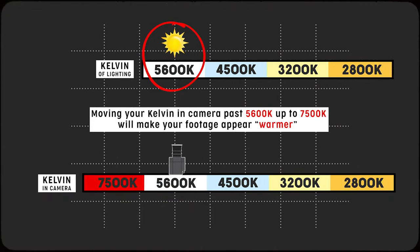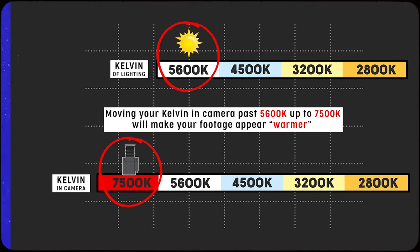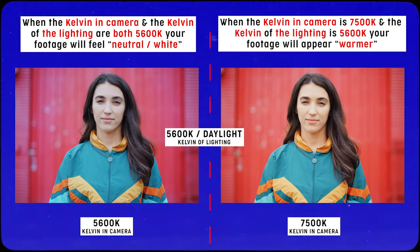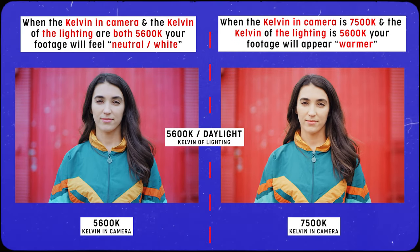The same can be done if you want to warm up the look when shooting outside. If you balance your camera's Kelvin at 7500, you'll notice your footage and the overall look is going to be significantly warmer.